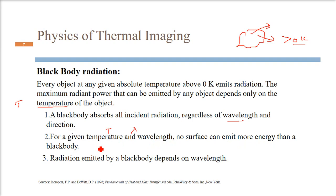It's an ideal thing. For a given temperature and wavelength, the lower surface can emit more energy than a black body because it is an ideal thing, so it will be less than that. Radiation emitted by the black body depends on the wavelength. As the frequency increases, the wavelength changes, so radiation emitted by black body depends on the wavelength, and other bodies too.